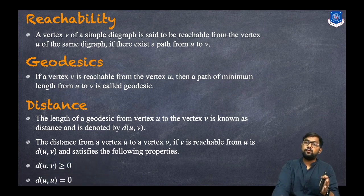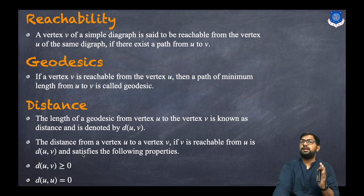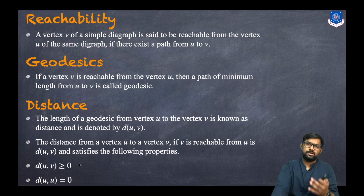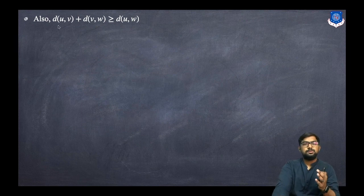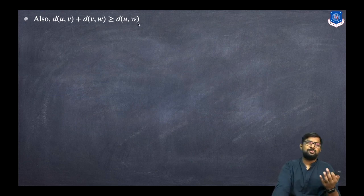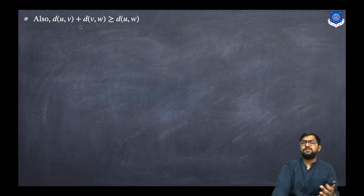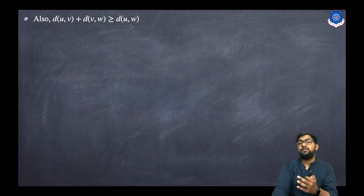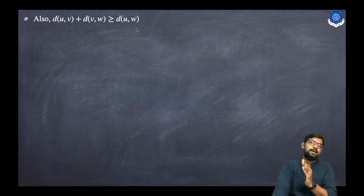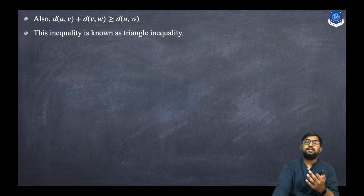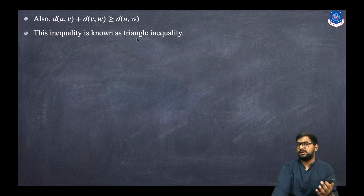The first property: distance of U, V is greater than or equals to zero — the distance between two vertices cannot be negative. The second property: distance of U, U equals zero, meaning distance from a point to itself is zero. The third property is the triangle inequality: d(U, V) + d(V, W) ≥ d(U, W). If we travel from U to W via vertex V, that total distance is always greater than or equals to the direct distance d(U, W). This inequality is known as the triangle inequality.